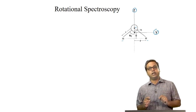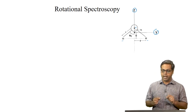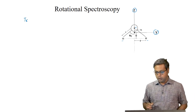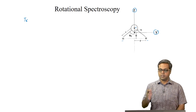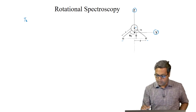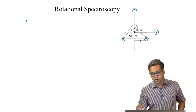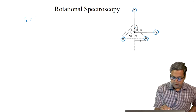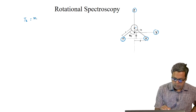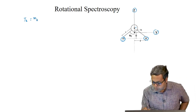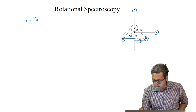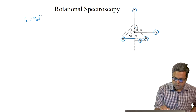Now we can calculate the moment of inertia along the different axes. Let us start with the Z axis — we will calculate IZ. Because the oxygen atom lies along the Z axis, it will not contribute to the moment of inertia along the Z axis. So only the two hydrogen atoms will contribute. The contribution from the hydrogen atom is the mass of hydrogen times the perpendicular distance from the hydrogen atom to the Z axis, which is given by F. So I can write M_H F squared.